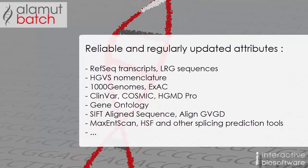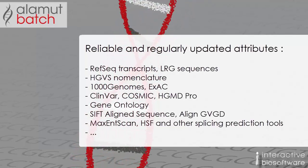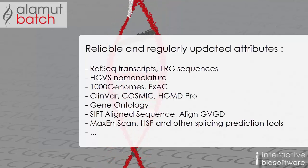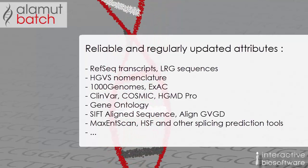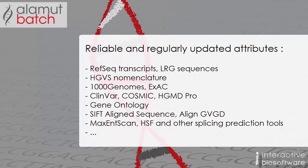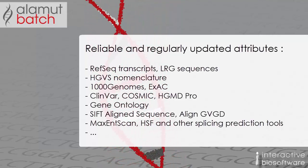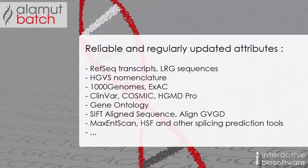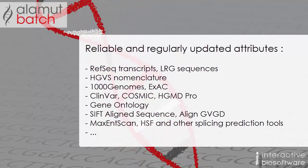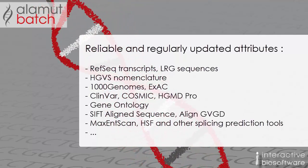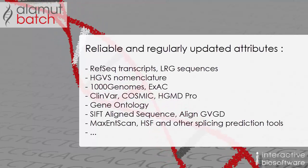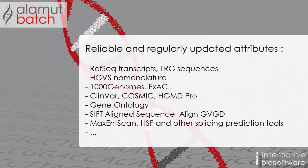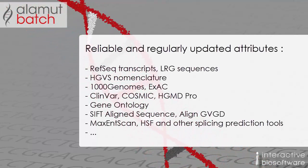Alamut Batch computes predictions to assess the functional consequences of missense variants thanks to SIFT and Align GVGD. Alamut Batch also provides advanced splicing effect predictions based on MaxEntScan, HSF and other splicing prediction tools.